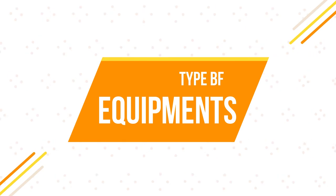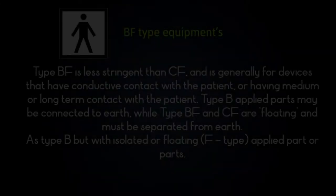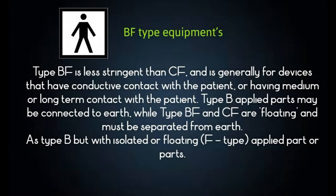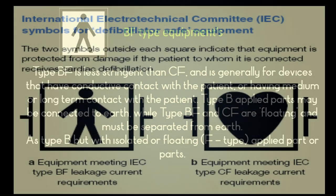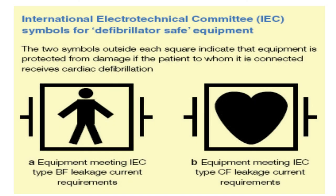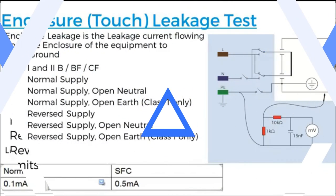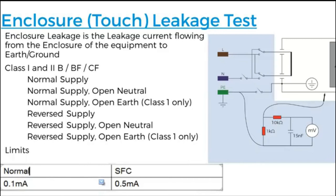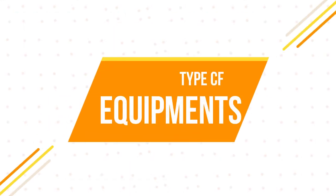The next type is BF Equipment. Type BF is less stringent than CF, and is generally for devices that have conductive contact with the patient, or having medium or long-term contact with the patient. Type B applied parts may be connected to earth, while Type BF and CF are floating and must be separated from earth, as Type B, but with isolated or floating F-type applied parts.